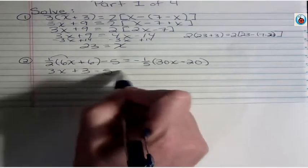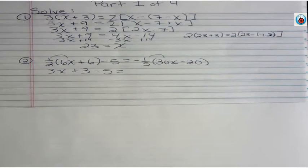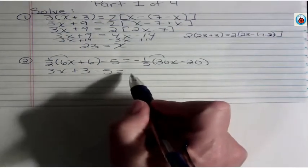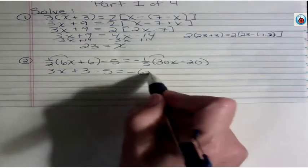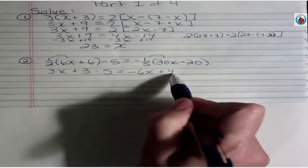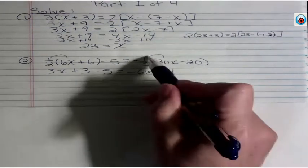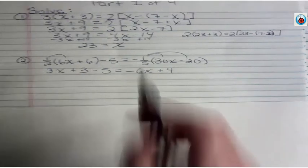The most obvious problem students have as they go through algebra is that they aren't competent with fractions. So if you have trouble with fractions you need to go back and work on that because it's going to stop you in your tracks. Because you have to apply the rules of fractions in a more general sense later and if you don't understand what you're really doing you're not going to be able to just use a calculator to get the answer and you're going to be in trouble. Here I'm distributing negative one-fifth to both 30x and 20. 5 goes into 30 6 times. 5 goes into 20 4 times. And I had two negatives. That's how I got the positive.